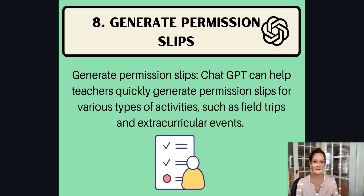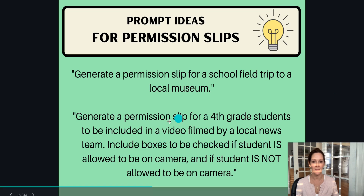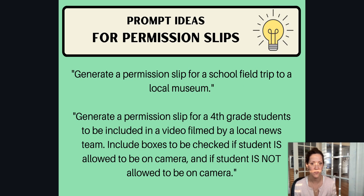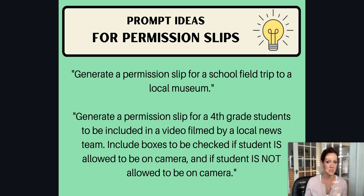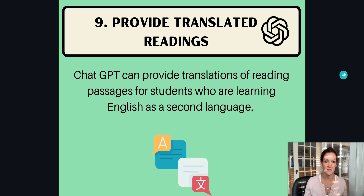Generating permission slips is another idea — for example: generate a permission slip for a fourth grade student to be included in a video filmed by a local news team; include boxes to check if a student is allowed or not allowed to be on camera. Think about those one-off situations where you need to create a handout or send an email to parents. ChatGPT can do this so quickly — I've spent a lot of time writing the perfect email to parents, and it's a huge time saver.